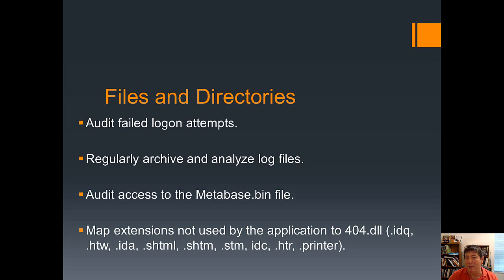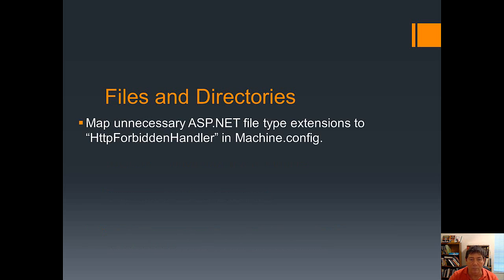Maybe someone hacked in and changed something to gain an advantage. There are quite a few file extensions that IIS has by default. These are fine, except if someone is trying to find a vulnerability they might try to exploit them. What I normally do is go into the IIS control panel and disable any extension that my application doesn't use. The long list of file extensions IIS supports is not necessary and just gives a small chance for someone to exploit those. Also, ASP.NET has a config file called machine.config — add your forbidden handler to machine.config.